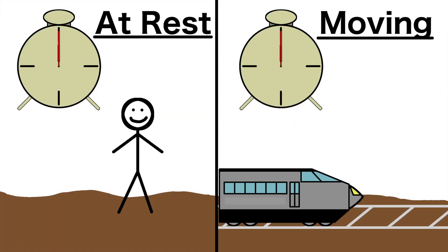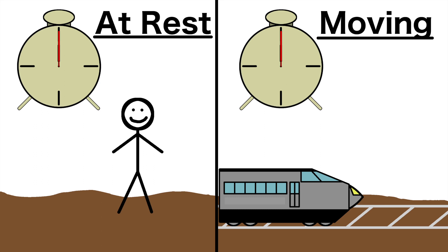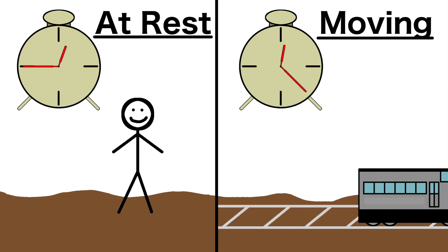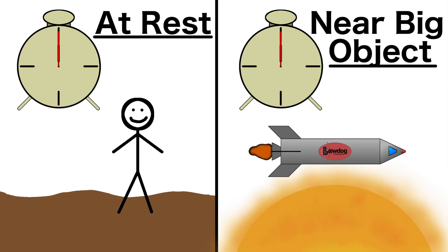Time can slow down or speed up in two scenarios. One, the faster you travel, the more time is distorted, and two, the closer you are to a massive object, the more time is distorted.